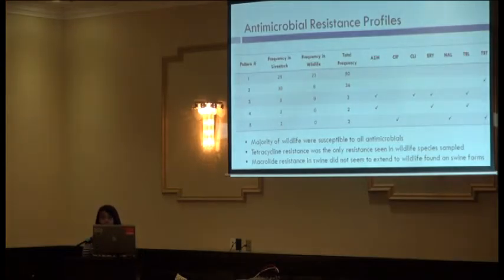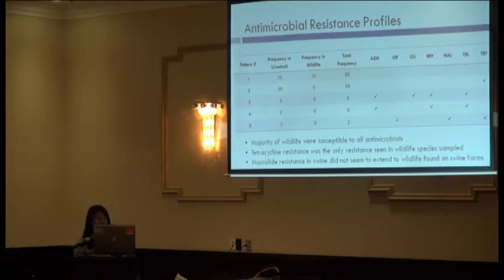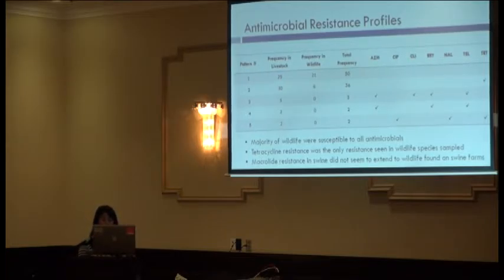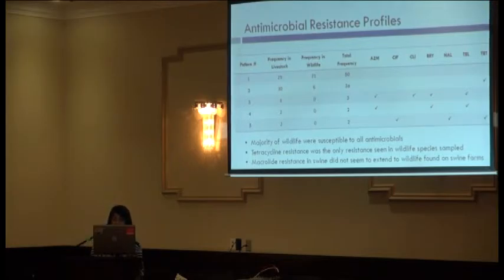To understand prevalence differences further, we examined whether antimicrobial resistance patterns were seen in both wildlife and livestock populations. We found that the majority of wildlife samples were susceptible to all antimicrobials, and if they exhibited any resistance, it was to tetracycline. Macrolide resistance and multi-drug resistance seen in swine didn't extend into wildlife, providing more evidence of that lack of crossover.